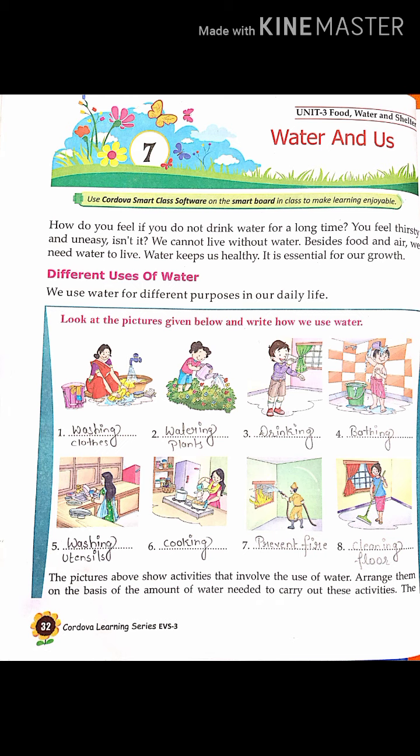I have already completed the first part of this activity. In the second part you have to complete it. The pictures show activities that involve uses of water. Arrange them on the basis of the amount of water needed — the activity that needs the maximum amount of water will come first. You have to arrange the activities: whichever uses the maximum amount of water, write that first, then second, third, fourth accordingly.